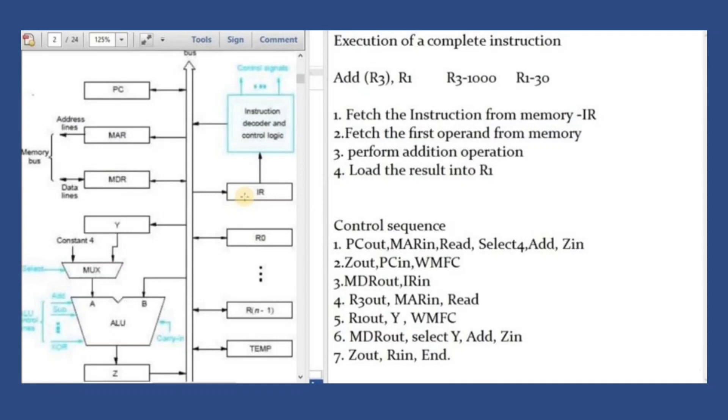Now we will see the execution of a complete instruction. For example, the instruction is addition of register 1 and register 3. Register 1 contains the integer 10 and register 3 contains the integer 20.